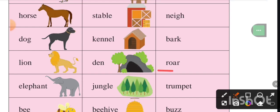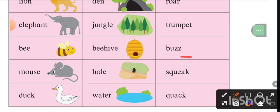Lion, den, roar. Elephant, jungle, trumpet. Bee, beehive, buzz.